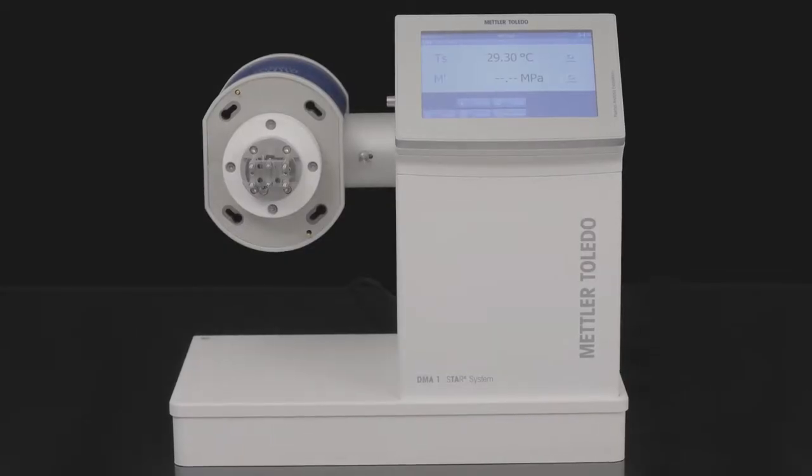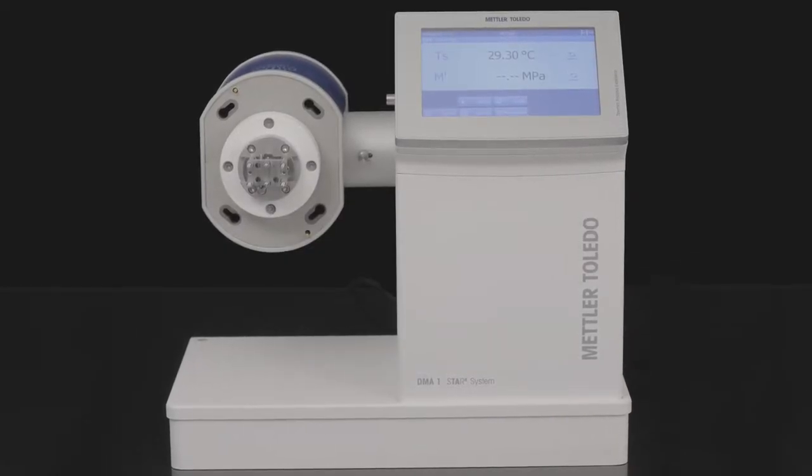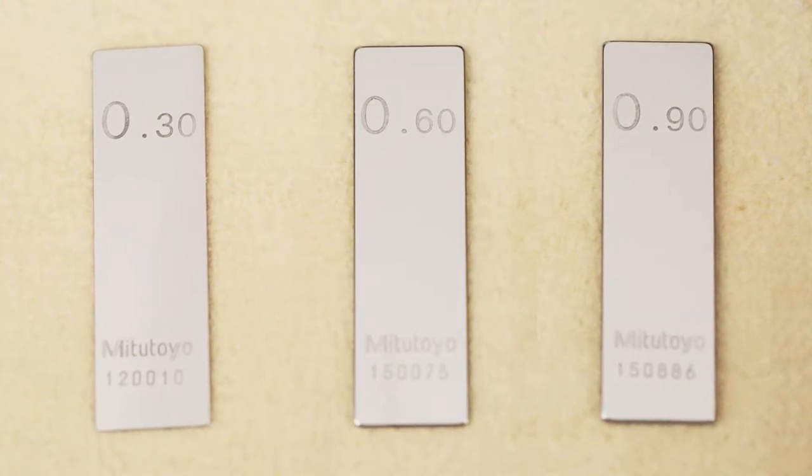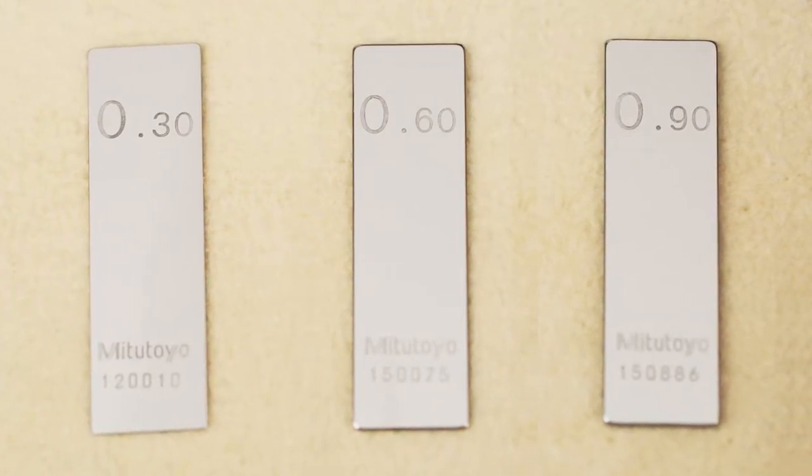The displacement adjustment is based on the measurement of length differences. It is performed by interchanging gauge blocks. It is highly recommended to perform the displacement calibration with certified gauges. These are available from Mettler Toledo as an accessory to the DMA1.